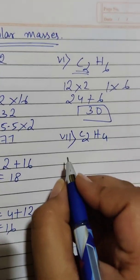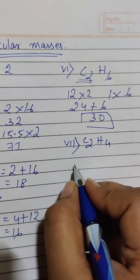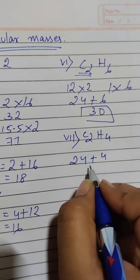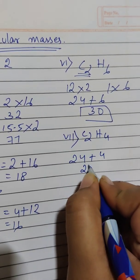C2H4. Two of carbon, twenty-four. Plus four hydrogen. Which is twenty-eight.